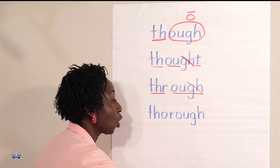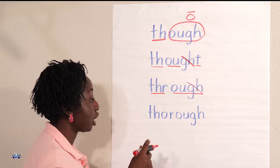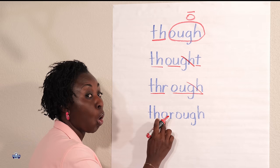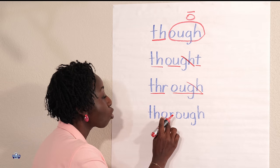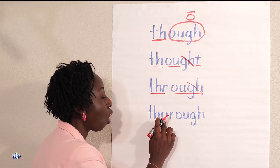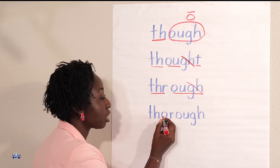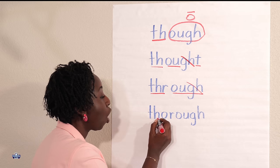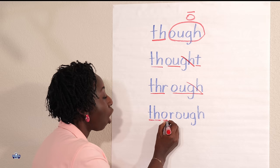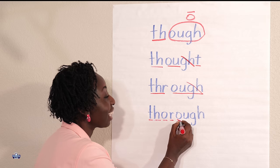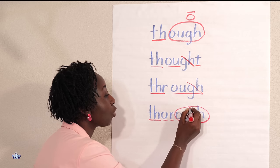Okay, here we have the TH, O, R, O. This is the O sound. TH-O-R-O, and then again, this is the O sound, the long O. So, thorough.